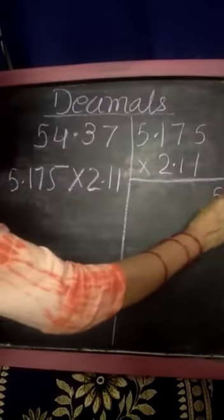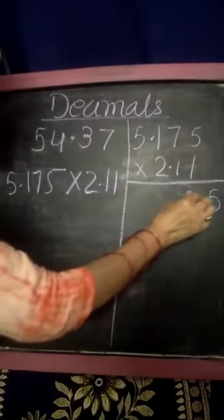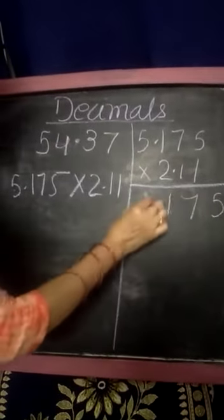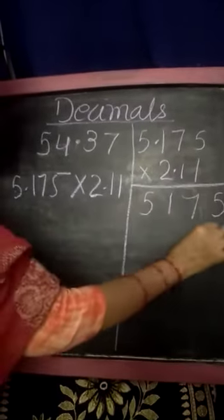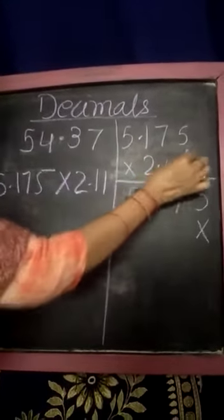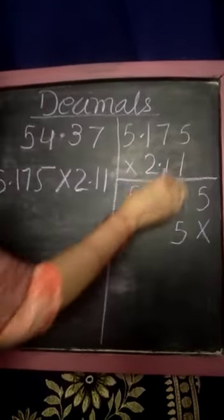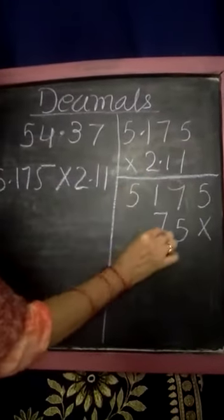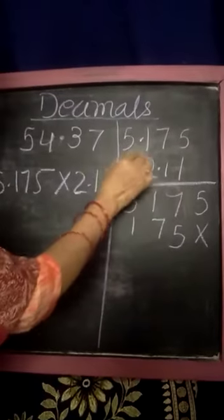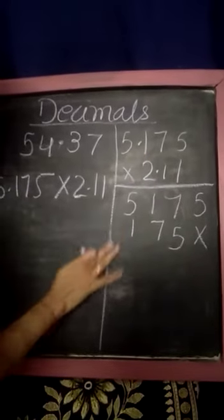1 times 5 is 5. 1 times 7 is 7. 1 times 1 is 1. 1 times 5 is 5. Now again, here is 1. 1 times 5 is 5. 1 times 7 is 7. 1 times 1 is 1. And 1 times 5 is 5.